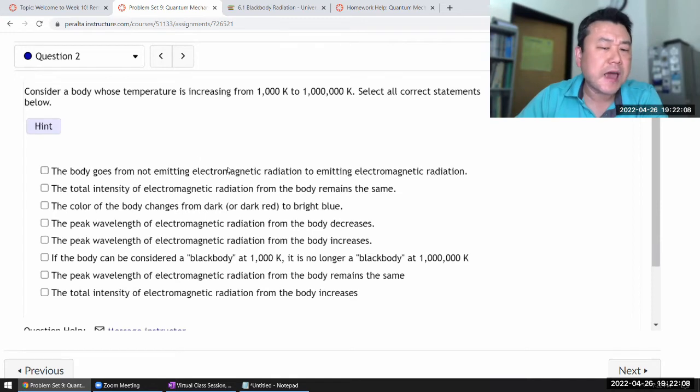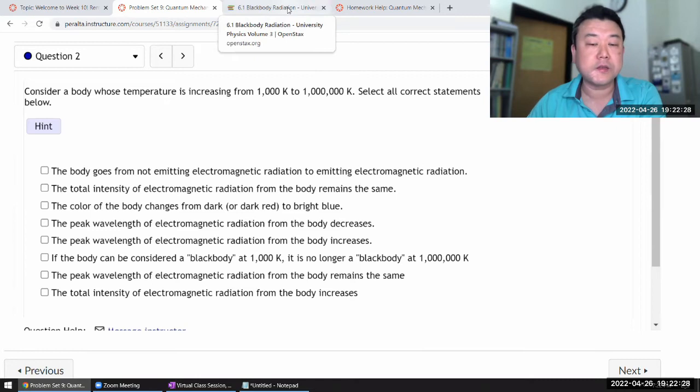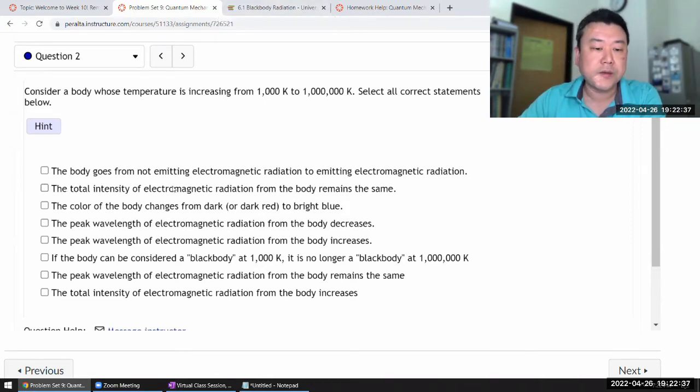Now, black body radiation is emitted by bodies of all temperature higher than zero Kelvin. So it's not quite going from not emitting EM radiation to emitting it. It's still emitting something here. So that's not correct. The total intensity of electromagnetic radiation. Now, this is not correct. Within the section, you read something called the Stefan Boltzmann law. It talks about how the intensity of light goes as temperature to the fourth power. So there's a quite strong dependence on total intensity. So that's not true.